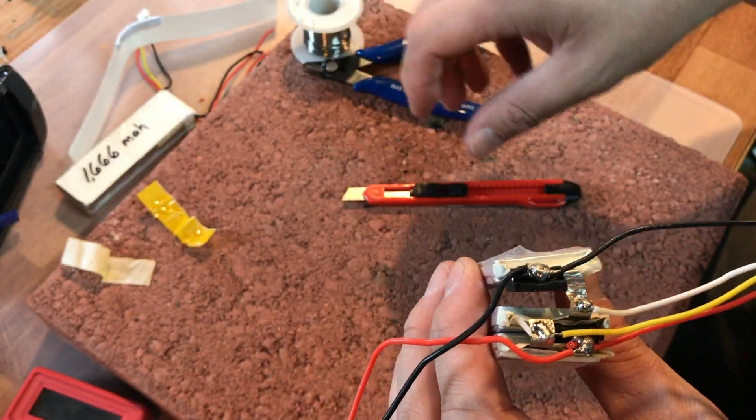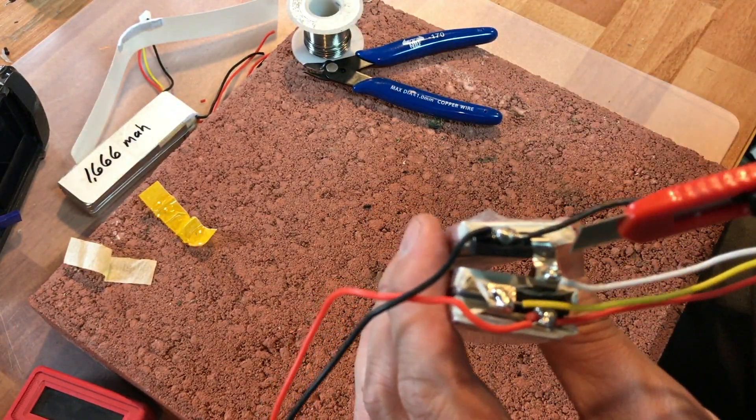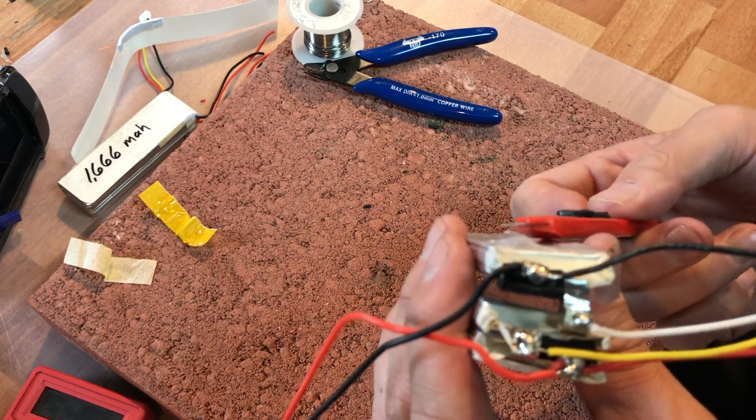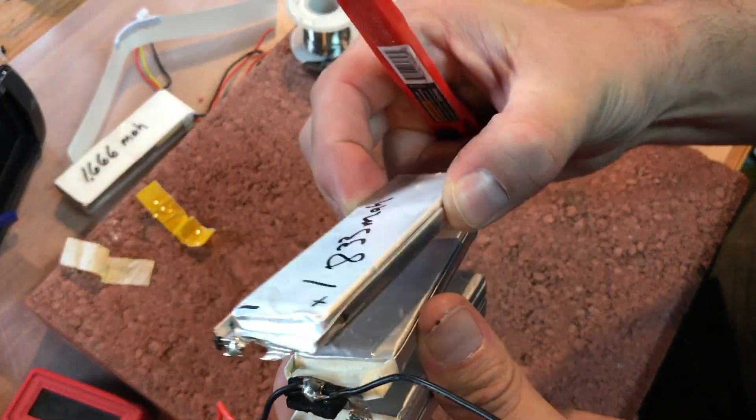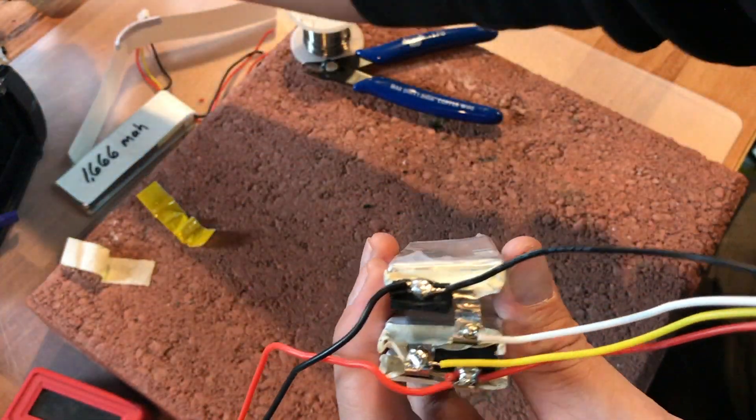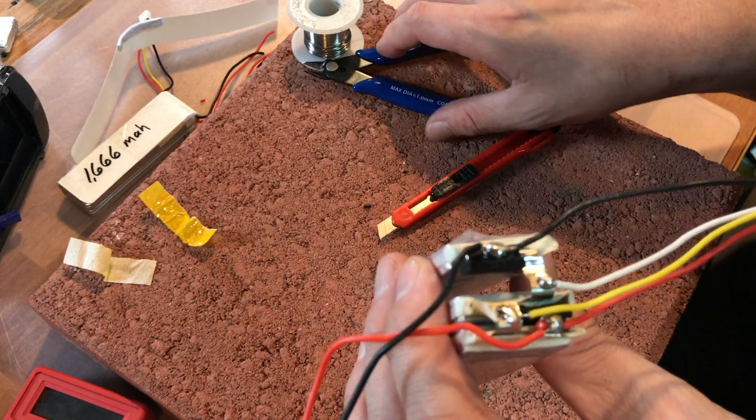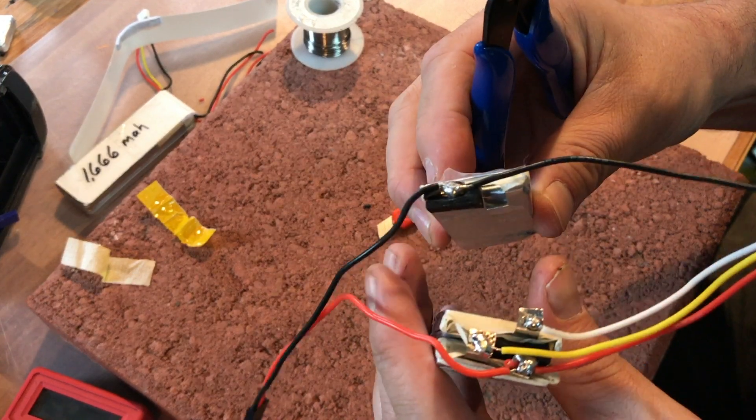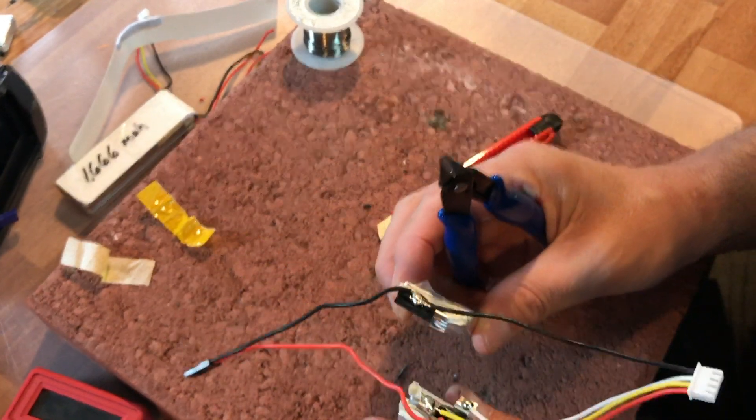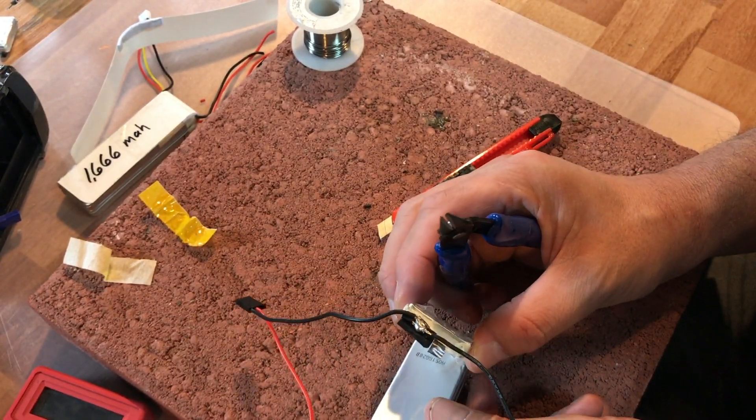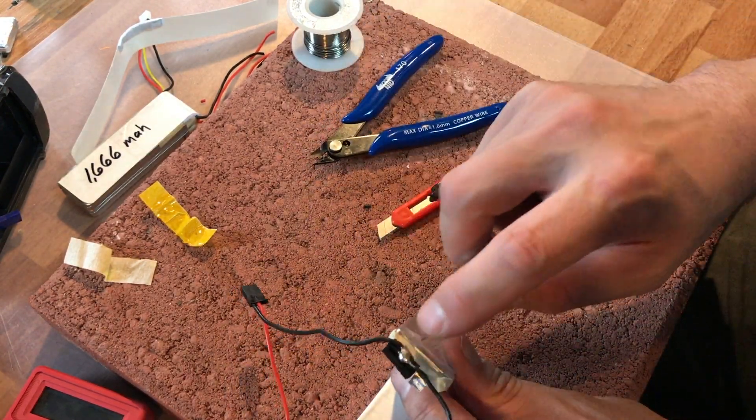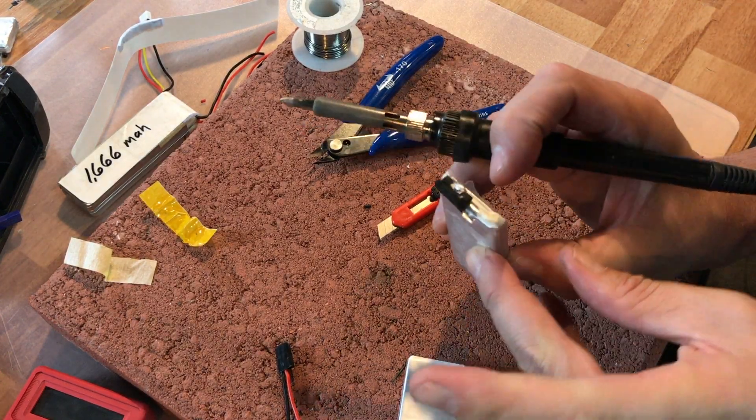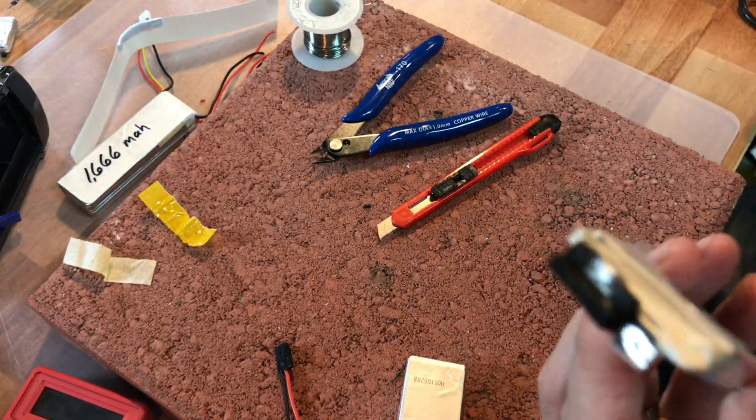I'm going to go ahead and cut this lead right down here. I want to leave a little bit of a tail there, so in case I want to use this cell for something else, or if I want to make another 2S pack, I can put these two cells together. I can wire them together and get everything soldered up properly. So I'm going to go ahead and desolder this lead right here. There we go. Lead is off. And here is the single cell that we don't need anymore.